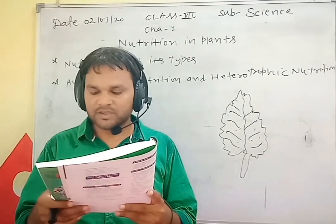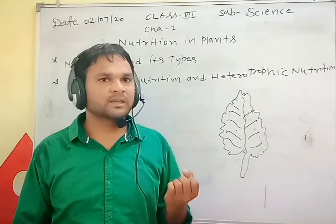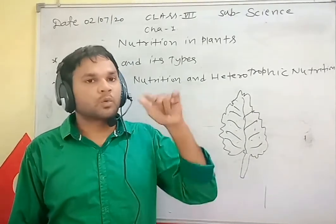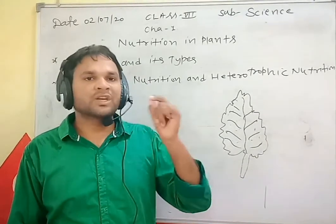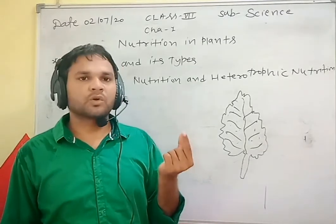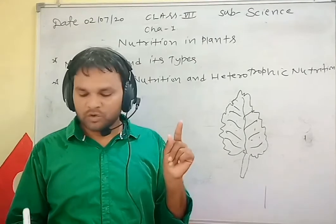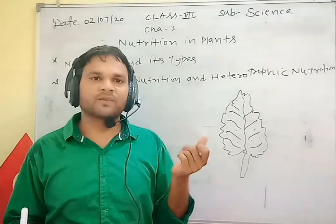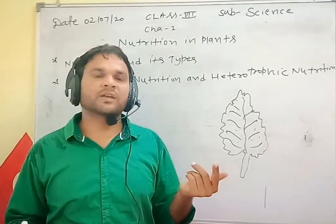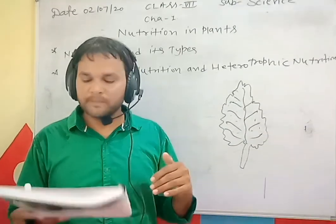Autotrophic nutrition is very simple to understand. When green plants use photosynthesis to prepare their own food, the process is called autotrophic. Autotrophic means 'auto' — self, and 'trophic' — feeding. So autotrophic means self-feeding: plants produce their own food.